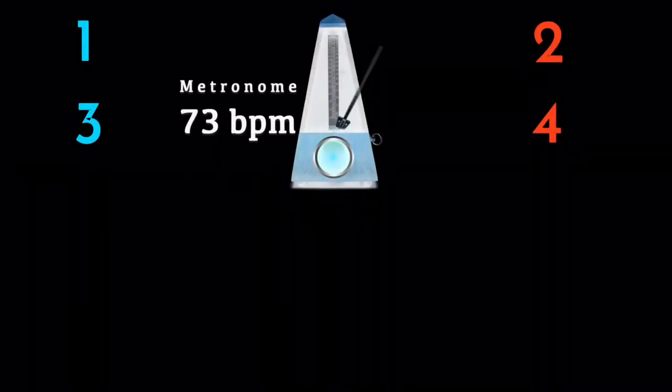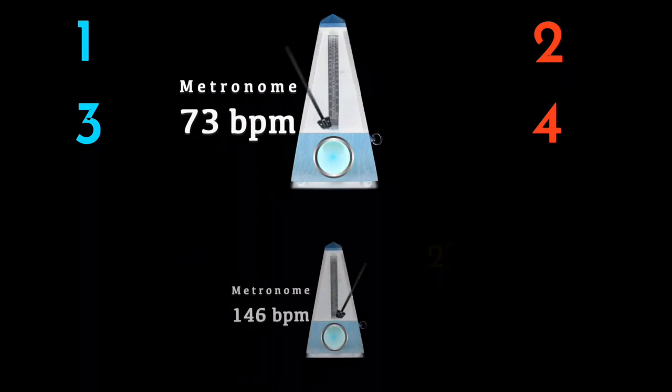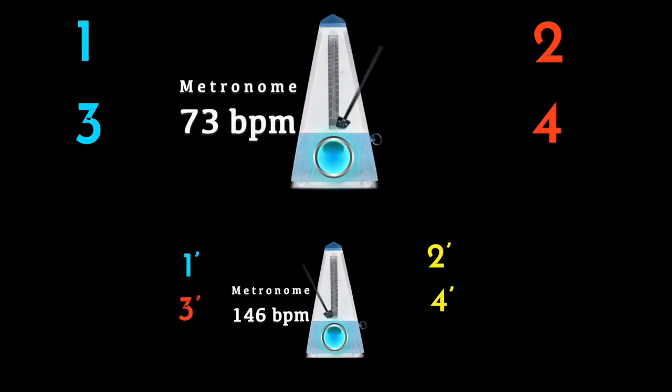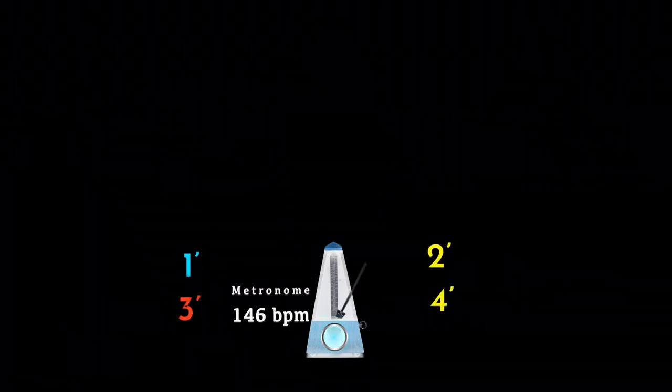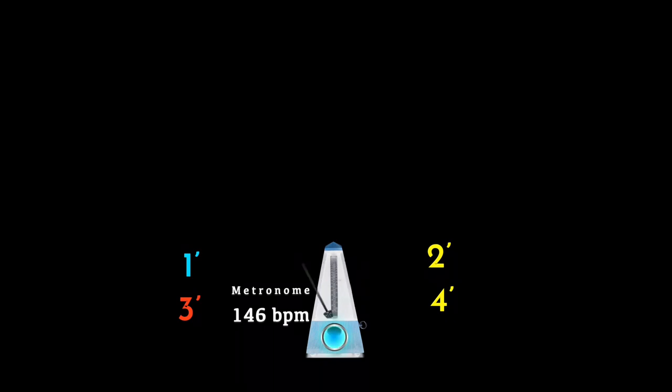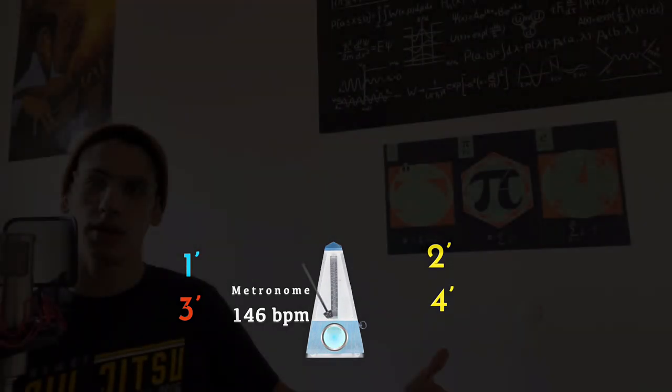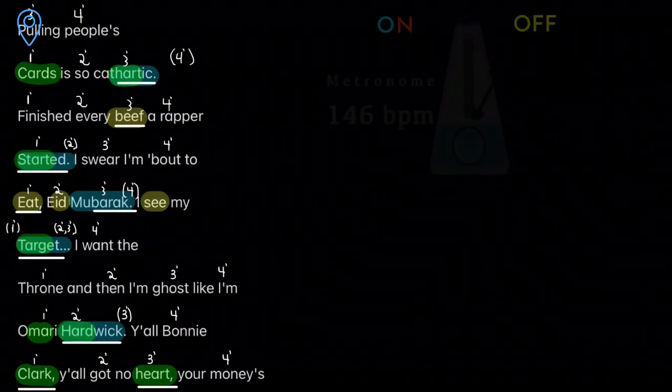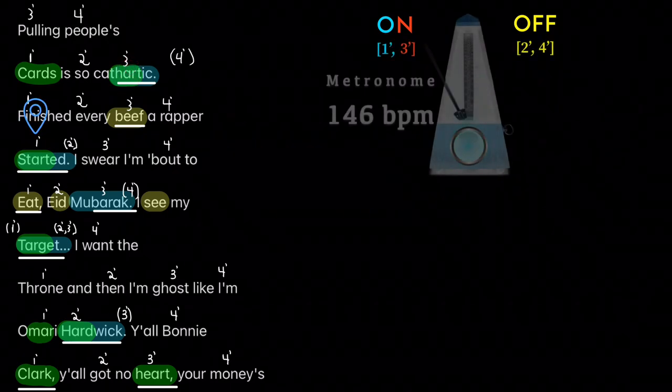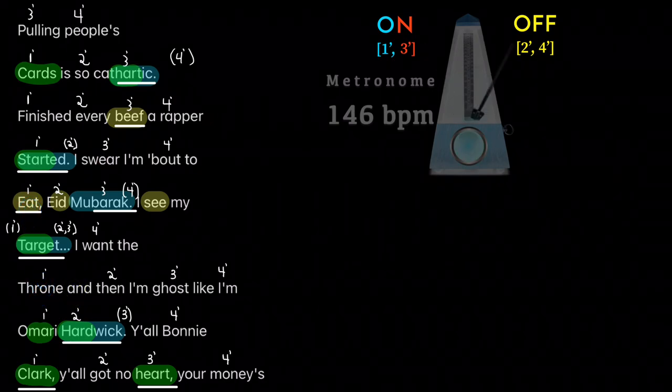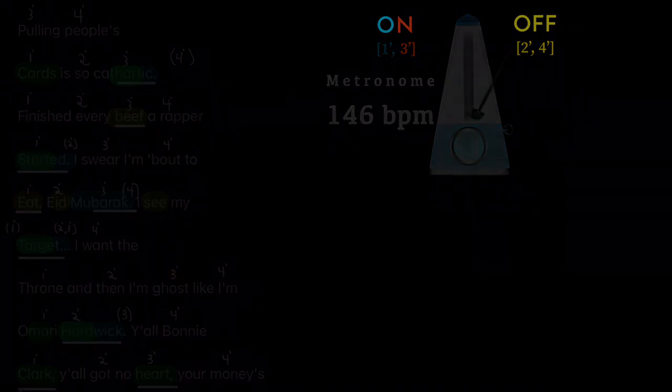Instead, he might be thinking in terms of double time, which is simply just doubling the speed of the beat and counting in a four count. So we'll call it four prime just to make the difference. And now let's see, by fitting the same piece of the verse to this double time tempo, if that makes a little bit more sense with what Russ was trying to do with this verse. Pulling people's cards are so cathartic. He finished every beat, a rapper started. I swear I'm about to eat, I eat Mubartic. I see my target. I want the throne and then I'm ghost like I'm Omari Harvick. Y'all Barney Clark, y'all got no heart. The money's Robert Jarvik. Do a card trick, make it quick.